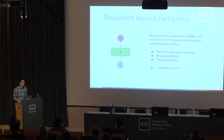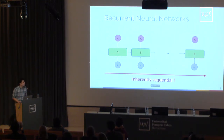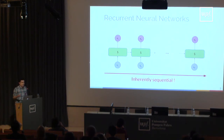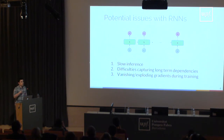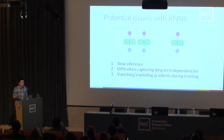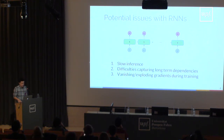So I'm going to get to the main motivation of this work, which is that RNNs are sequential. This is good — that's why they can model temporal dependencies in the data — but at the same time this can come with problems, especially when we work with very long sequences. These problems include slow inference because you cannot parallelize computation across time steps, and during training it's difficult to capture long-term dependencies, and you can also have exploding or vanishing gradients.